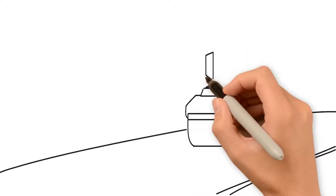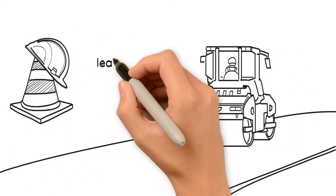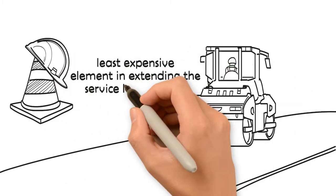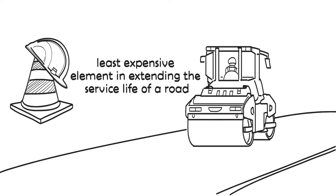Gaining effective compaction is the least expensive element in extending the surface life of a road, as achieving good density can save significant amounts in future road maintenance.